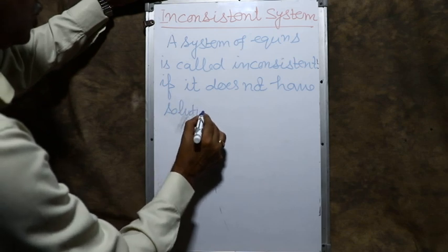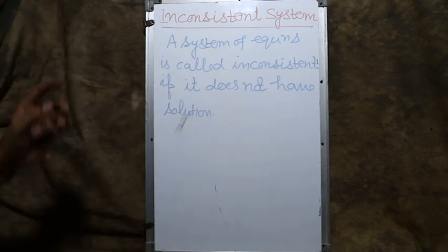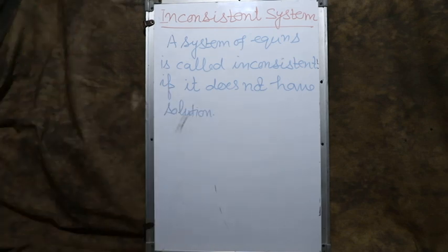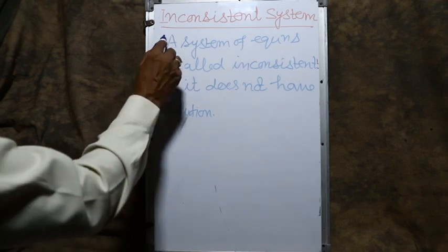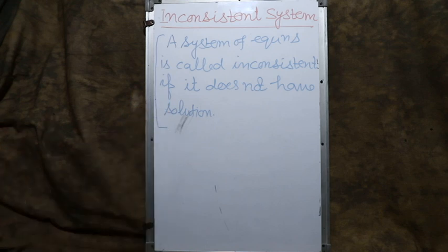Students, you have learned in class 10th also — three conditions were taught: unique solution, no solution, and infinitely many solutions. Here the same thing applies: no solution means it is called an inconsistent system.